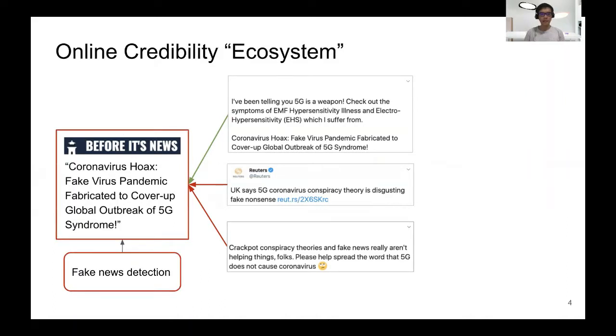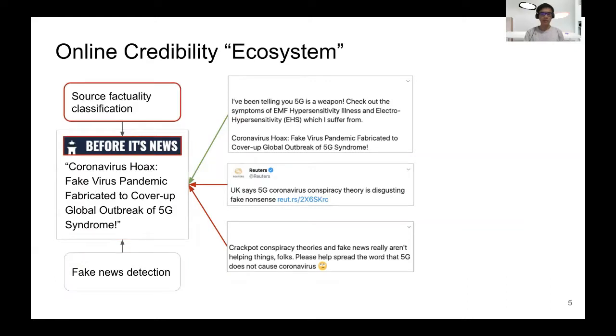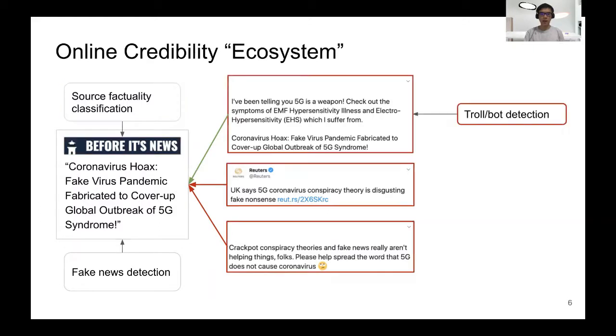When we take a step back, we realize that there is an online credibility ecosystem. If we check for the credibility of the news, then we have fake news detection. If we check for the credibility of source, then we have source factuality classification. And if we check for the credibility of users, then we have troll-bot detection.